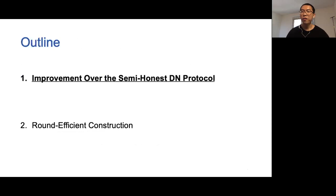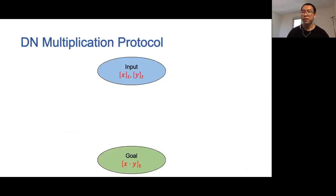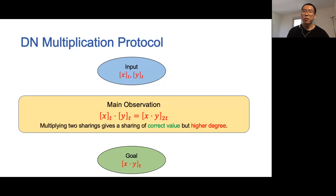In the following, we will first introduce our construction that improves the concrete efficiency over the semi-honest DM protocol. We first review the DM multiplication protocol, which is the core of the DM protocol. Given two input sharings [x] and [y], our goal is to compute an output sharing of the secret x times y. The main observation is that multiplying two degree-t sharings yields a sharing of the correct value but with higher degree. Therefore, the main task is to reduce the degree of the multiplication result.